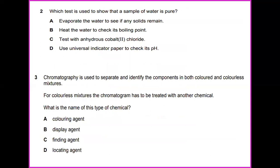Number 2. Which test is used to show that a sample of water is pure? Testing for pure water, pure water should have a boiling point of 100 celsius. If you heat a liquid and it begins to boil either below or above 100 celsius, so the liquid contains impurities. So the answer for this question would be heat the water to check its boiling point.